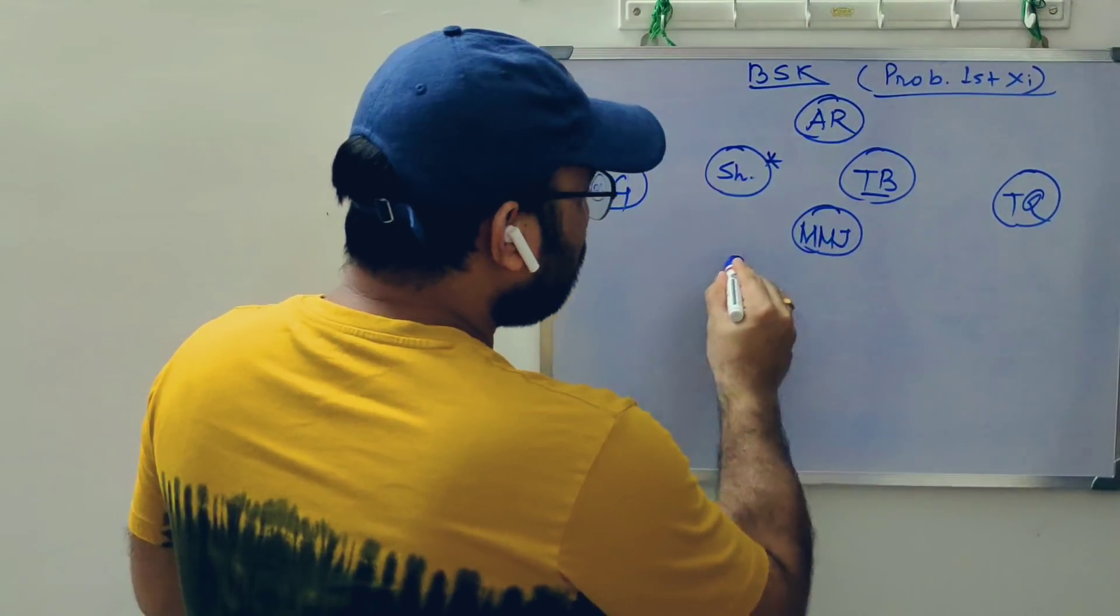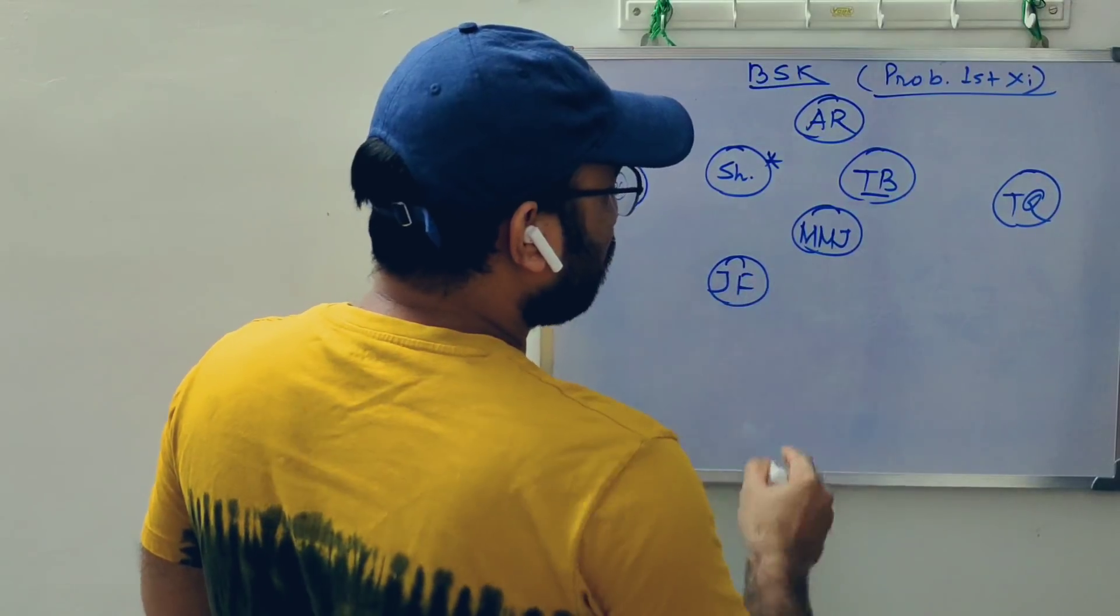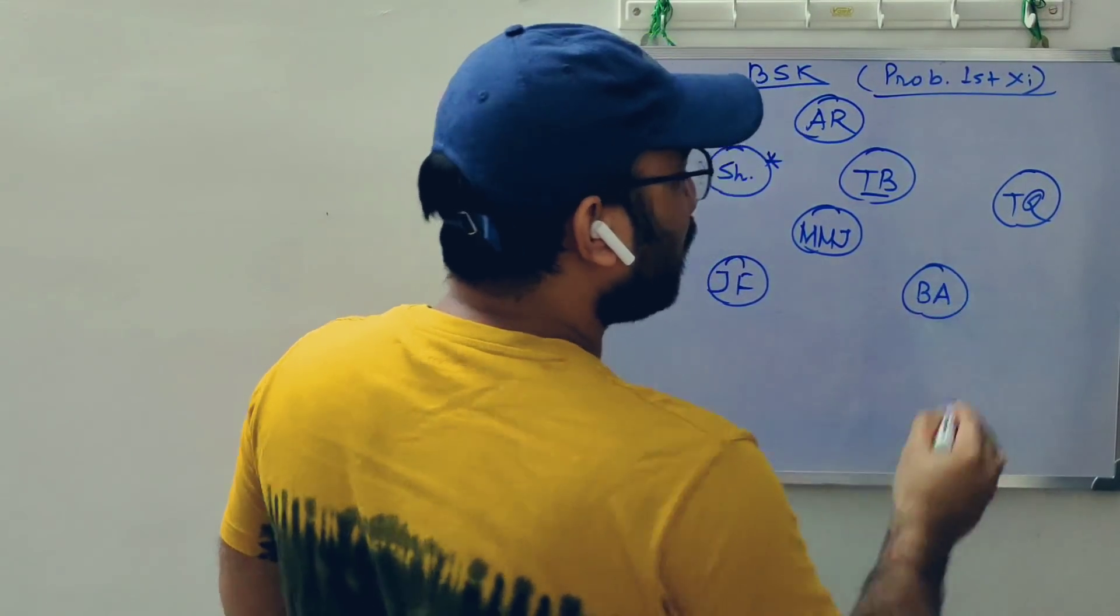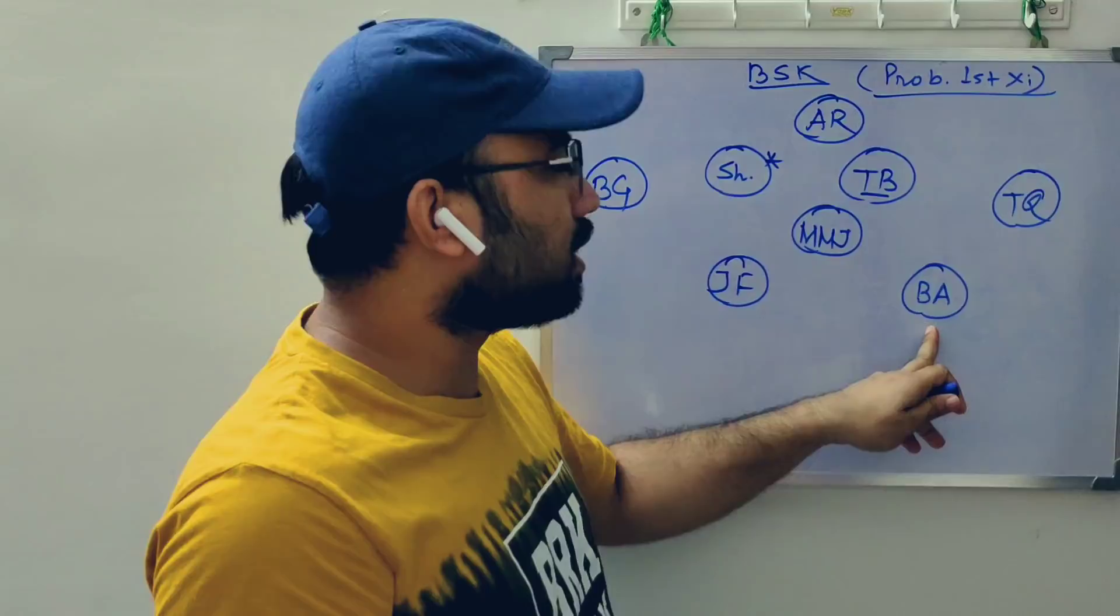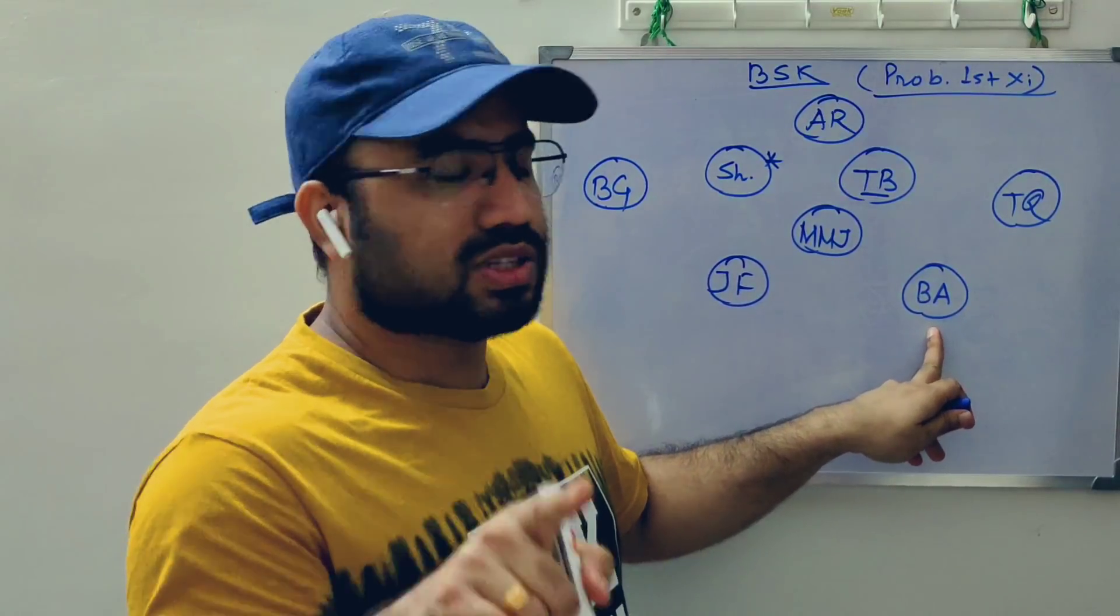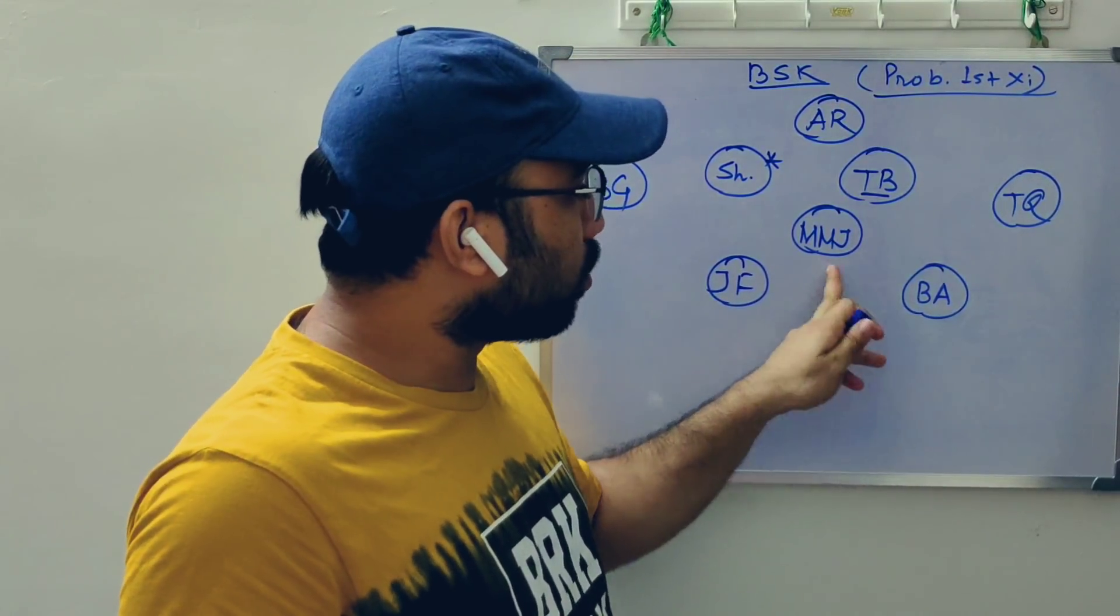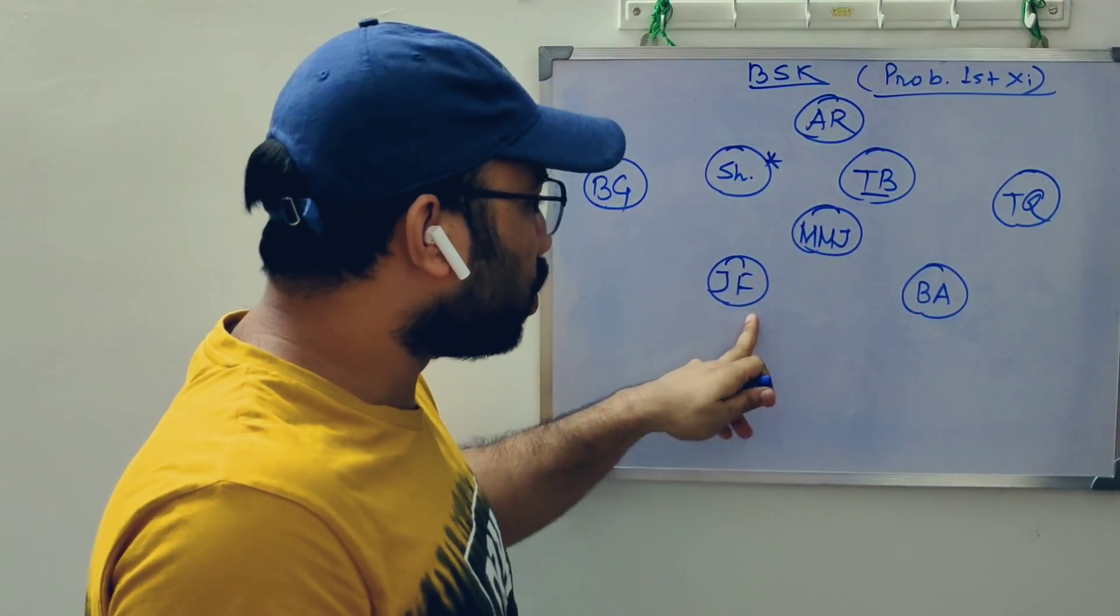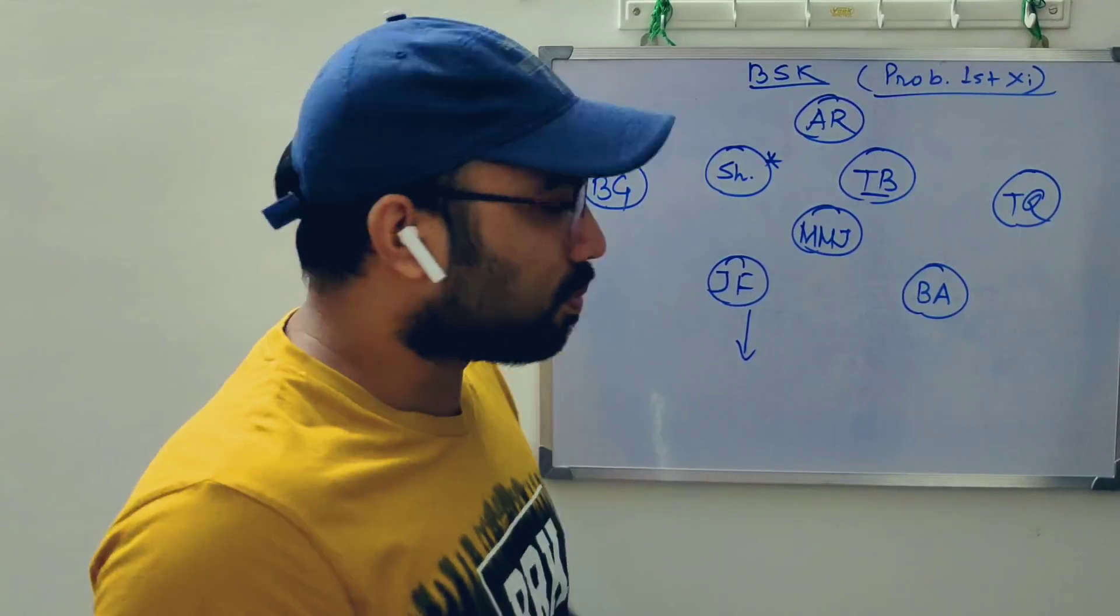The central attacking midfield position has Jonathan Fernandez and Biplu Ahmed. This is Biplo Ahmed from Bangladesh Super League. He has shown his best performance. This is another player on the wing who has been playing with Basundhara Kings. Jonathan Fernandez can attack every time.